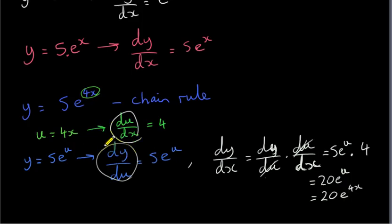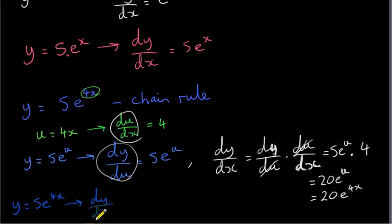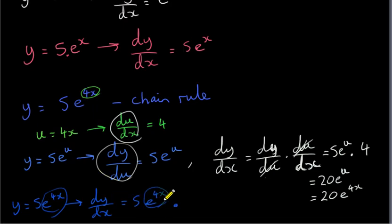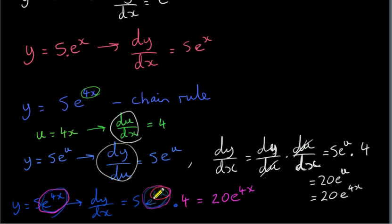You won't have to go through all this rigmarole in future — you just have to remember a few things. If we have y equals 5e to the power of 4x and we want to get its derivative dy/dx, what we do is we just copy down e to the power of whatever — in this case e to the power of 4x — and then we multiply by the derivative of the power, which is 4. We bring the 4 to the front to get 20e to the 4x. You just copy down the exponential function and multiply by the derivative of the power.